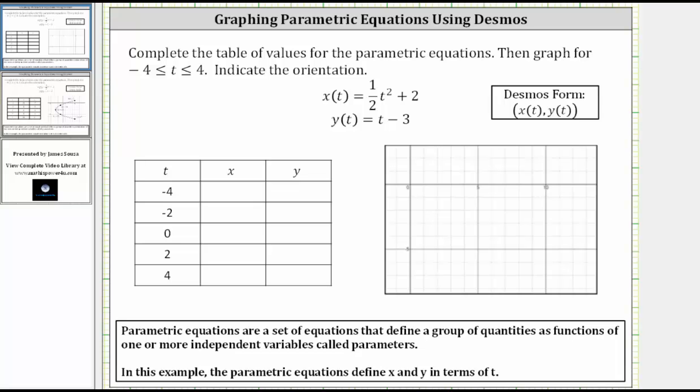In this lesson, we will use Desmos to graph a curve defined by parametric equations, complete a table of values, and indicate the orientation. Parametric equations are a set of equations that define a group of quantities as functions of one or more independent variables called parameters. In this example, the parametric equations define x and y in terms of t.